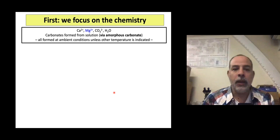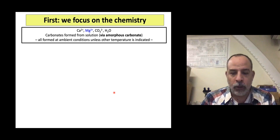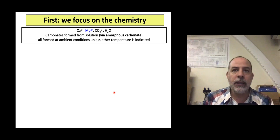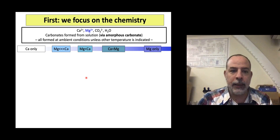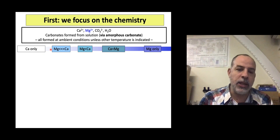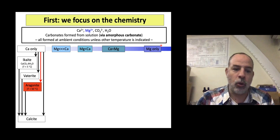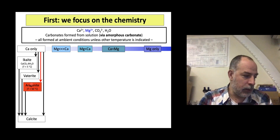First is the chemical variable. If we have a system containing calcium-magnesium-carbonate and water only — no other ions — and we form these carbonates by mixing solutions via amorphous phases, the outcomes are going to be very different depending on whether we have only calcium, only magnesium, or different ratios of calcium to magnesium in the aqueous solution. In the case of only calcium, as we have seen, we can produce calcite, but that may happen directly or via different polymorphs.